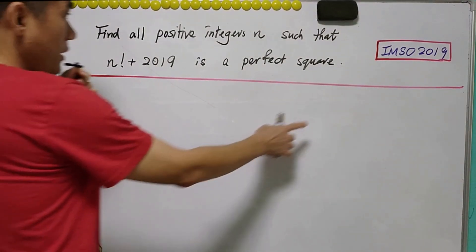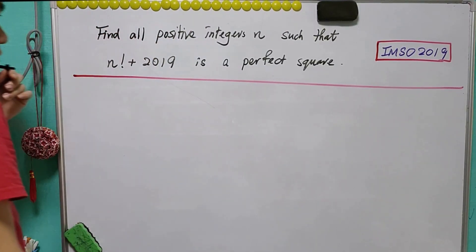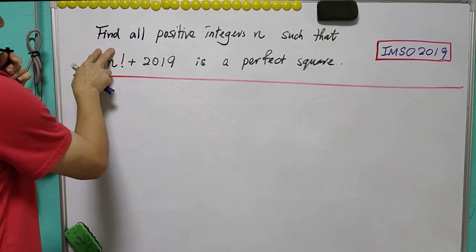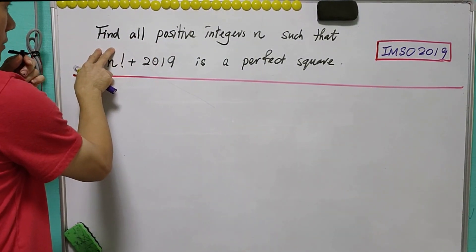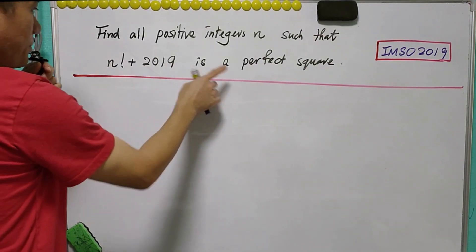This number theory question comes from IMSO 2019, a competition for primary school students.